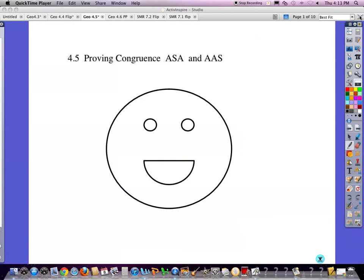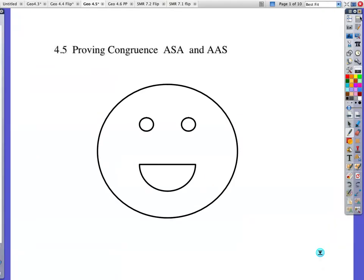Okay, we're looking at section 4.5, Proving Congruence using ASA or AAS. You're familiar with Angle-Side-Angle or Angle-Angle-Side, and this is basically the last of our rules for this with our A's and our S's.